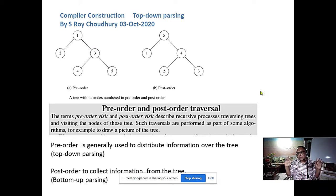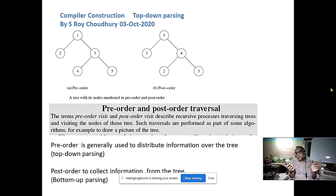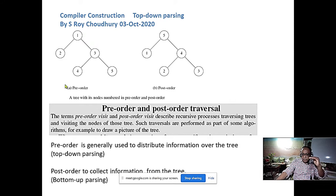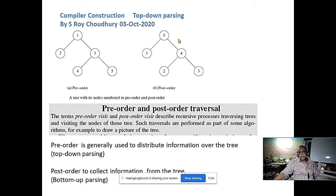In-order has no relevance in parsing. Another tree traversal technique you all know is level-order — visiting level by level — that also has no role in parsing. So there are three main types: pre-order, post-order, and in-order, plus level-order as the fourth. We require only two: pre-order for top-down approach and post-order for bottom-up (LR parsing), where we reach the root at the last.